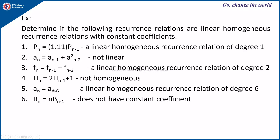For a(n) = a(n-6): it depends on the 6th previous term, so its degree is 6 and it is homogeneous. For b(n) = n·b(n-1): it is linear but not with a constant coefficient — the coefficient is n, which is a variable, not a constant like 2 or 1. So it is not a linear recurrence relation with constant coefficients.